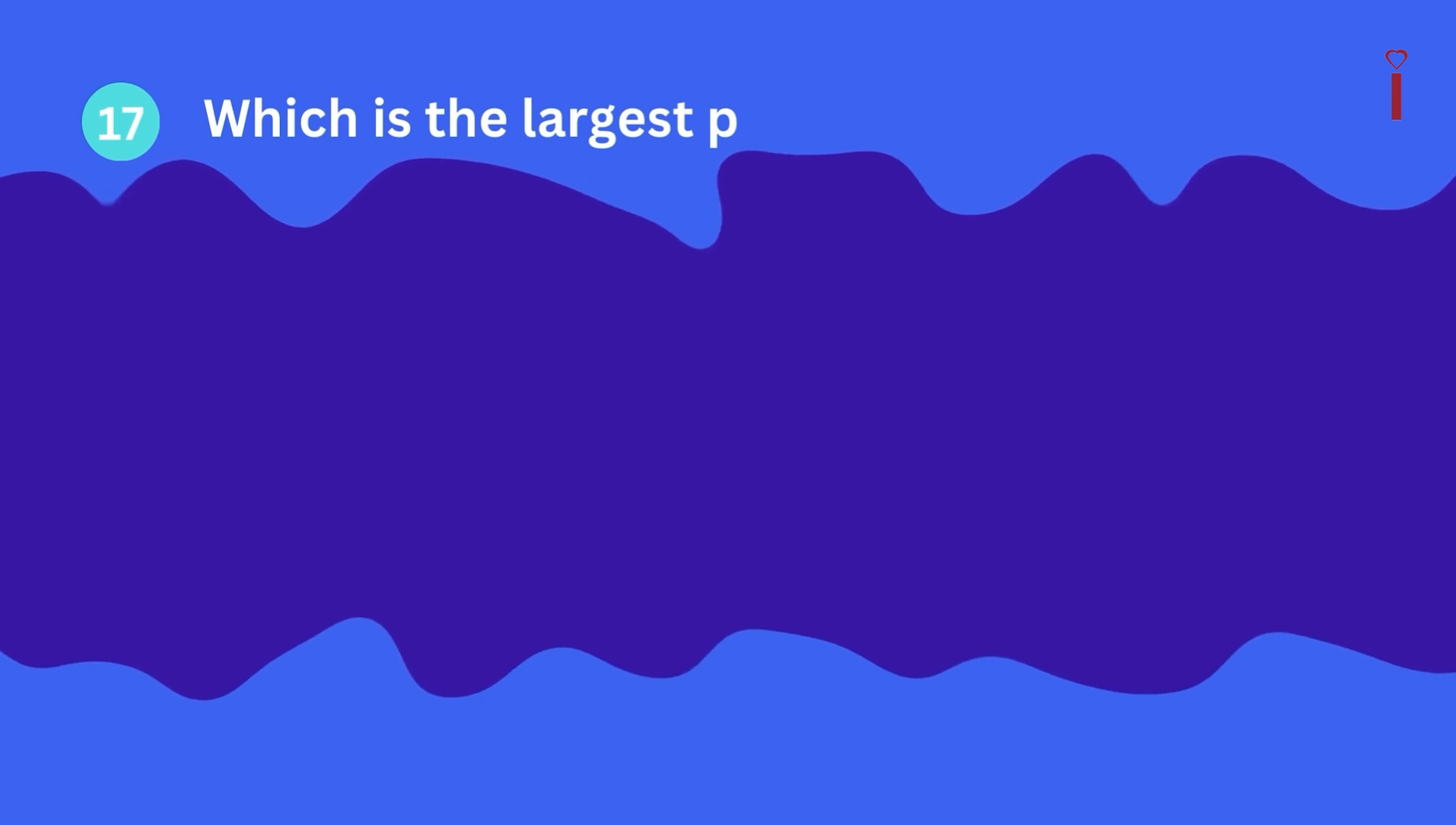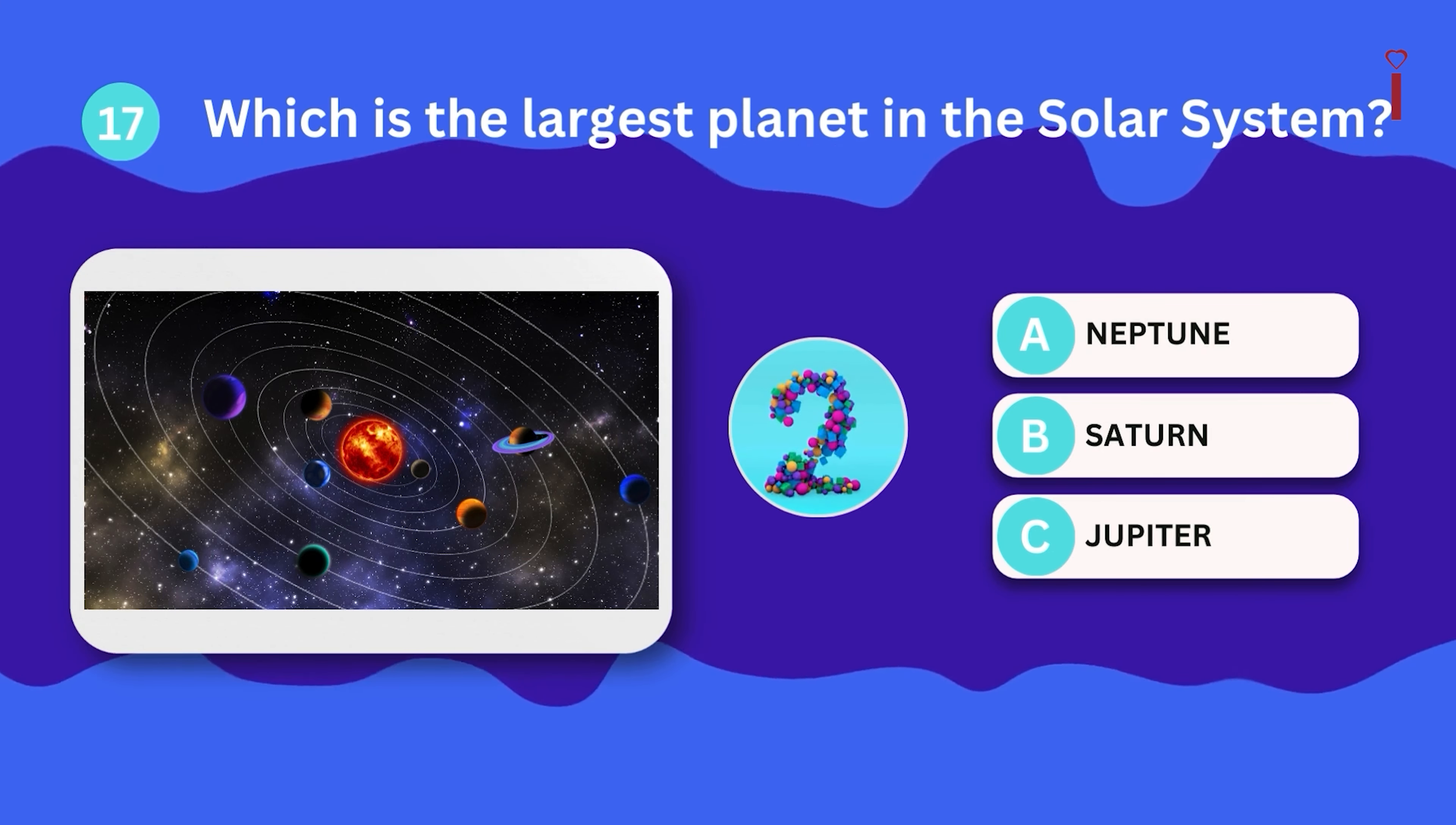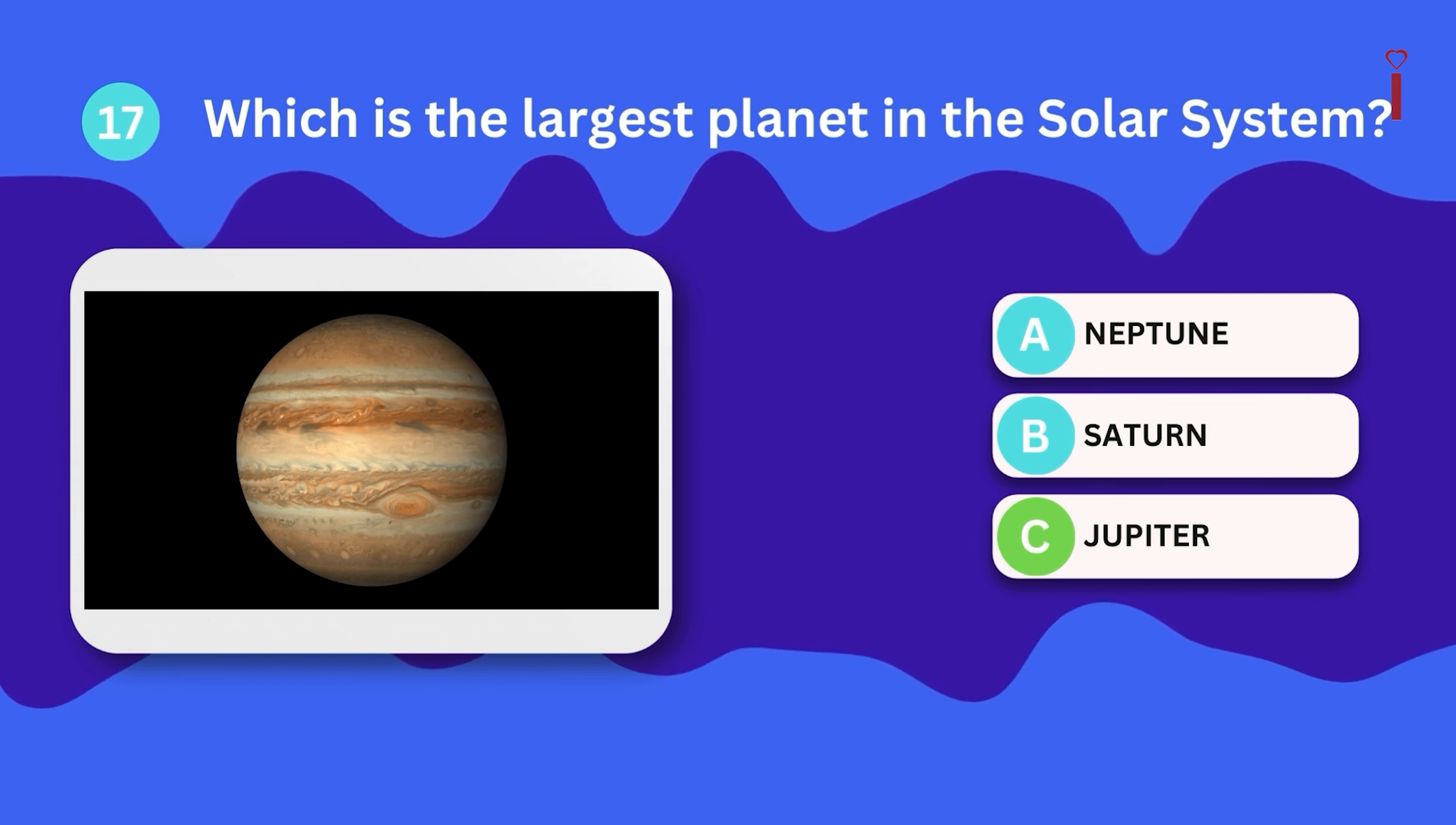Question number seventeen. Which is the largest planet in the solar system? Neptune, Saturn, or Jupiter? It's Jupiter. Its diameter is 139,000 kilometers, eleven times that of Earth.